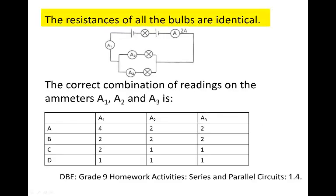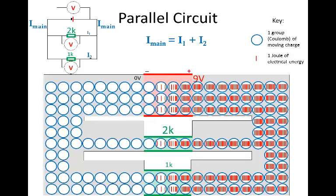The resistances of all the bulbs in this circuit are identical. The correct combination of readings on the ammeters A1, A2, and A3 is... Remember that a parallel circuit has branches in it.